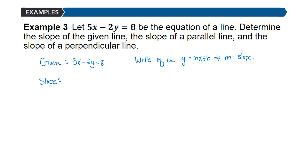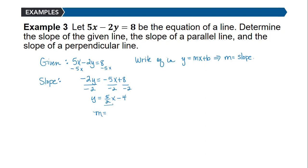To find the slope, we solve for y. Subtracting 5x from each side gives negative 2y equals negative 5x plus 8, then dividing by negative 2 gives y equals positive 5/2 x minus 4. So the slope of the given line is 5/2, the coefficient of x.